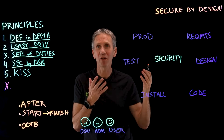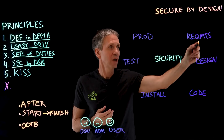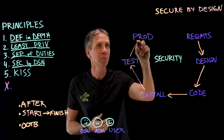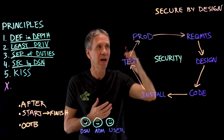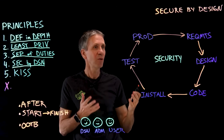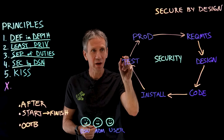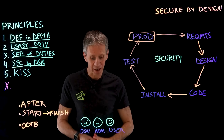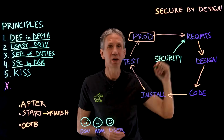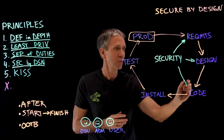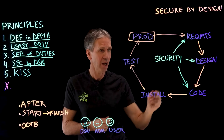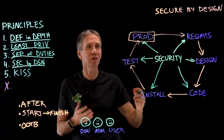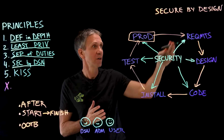In an IT project, we start with requirements, go into design, code the thing, install it, test it, and promote it to production — then feed that loop back for continuous development. What we don't want to do is wait until the production phase to do security. Security can't just be a bolt-on at the end. We need to look at security aspects of the requirements, build security into the design, apply secure coding principles throughout, install on a secure system, guard test data during testing, and keep testing in production.